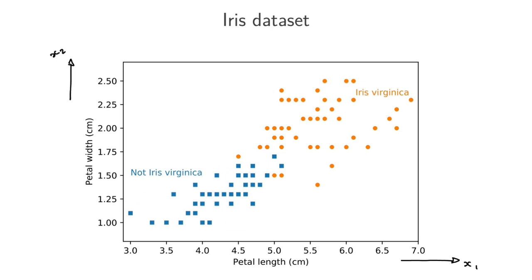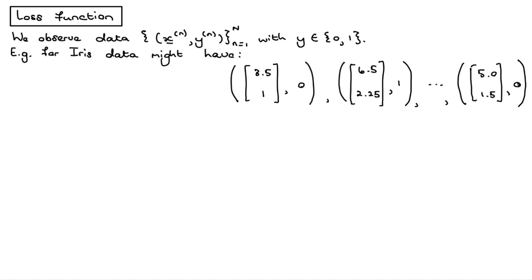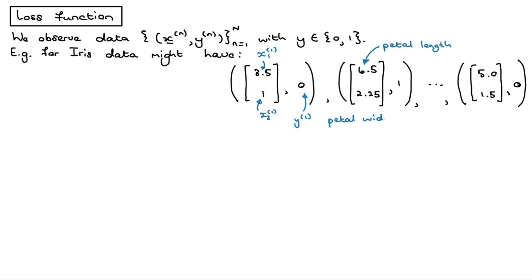So it's just a binary classification task: yes, you are an iris virginica, or no, you're some other type of iris. The data might look something like this: 3.5 is the first feature and something is the second feature for the first training item, with label 0 — so the first item is not a virginica. The first and second features for the second training item are 6.5 and 2.25, with label 1 — that flower is a virginica. The label indicates whether the flower is a virginica or not.